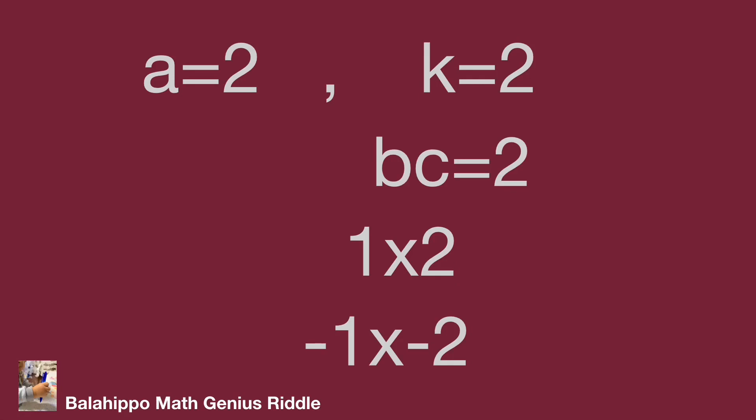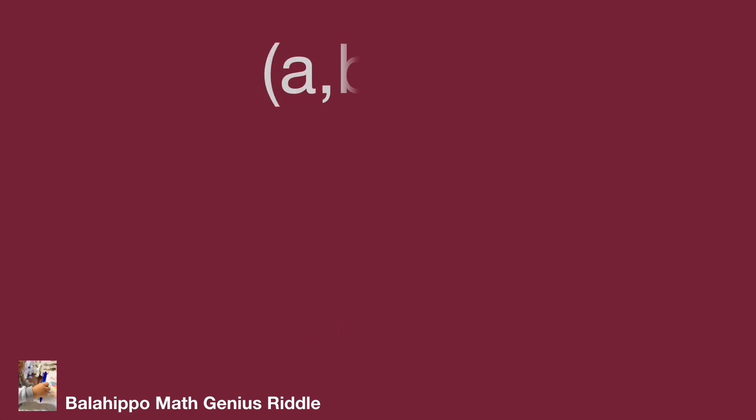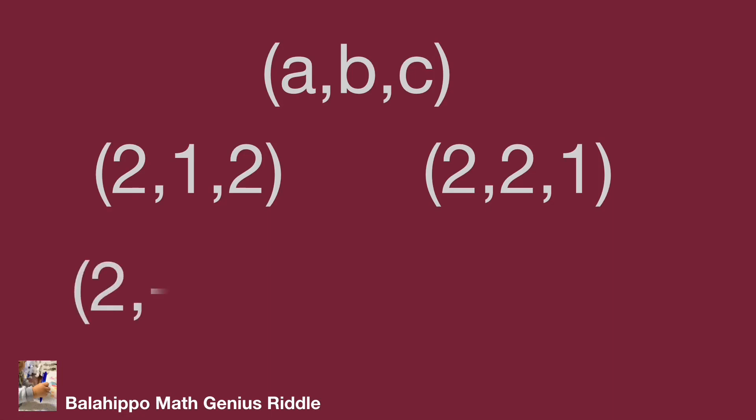Finally, we get the answers for the number group (A, B, C). It is (2, 1, 2) and B, C can swap as (2, 2, 1). The B, C negative group: (2, -1, -2) and (2, -2, -1). That is the number group we get.